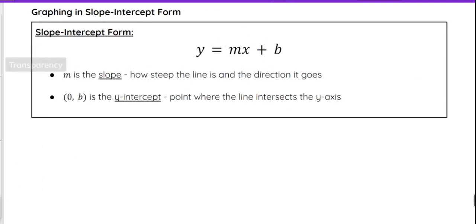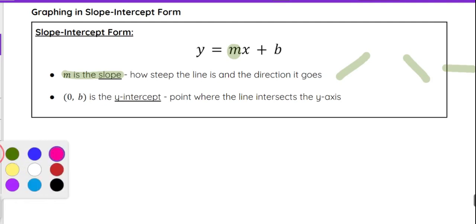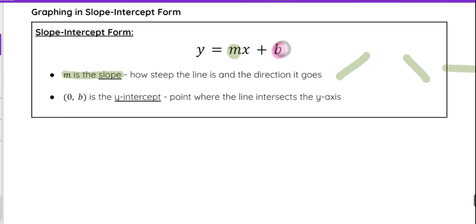When we graph in slope intercept form, remember that m represents the slope, and that tells us how steep the line is and what direction it goes — whether it's positive slope, negative slope, or slope of zero. And b is your y-intercept. So zero comma b is that y-intercept, and that is the point where the graph crosses the y-axis.